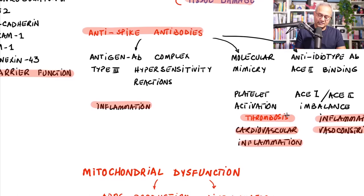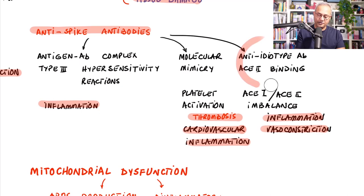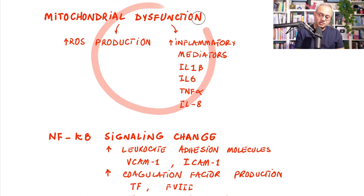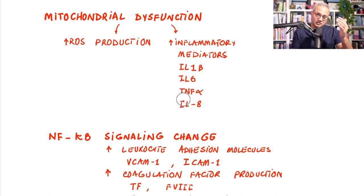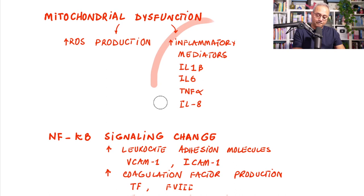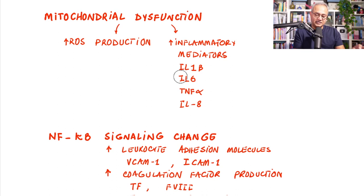Anti-spike antibodies, molecular mimicry, and anti-idiotype antibodies all cause problems. Mitochondrial dysfunction, discussed in previous FLCCC talks, also occurs. When mitochondria become stressed by spike protein in endothelium or other cells, ROS production increases, the cell is in trouble, local inflammation occurs, and the cell starts producing inflammatory mediators including IL-6, IL-1β, IL-8, and tumor necrosis factor alpha.